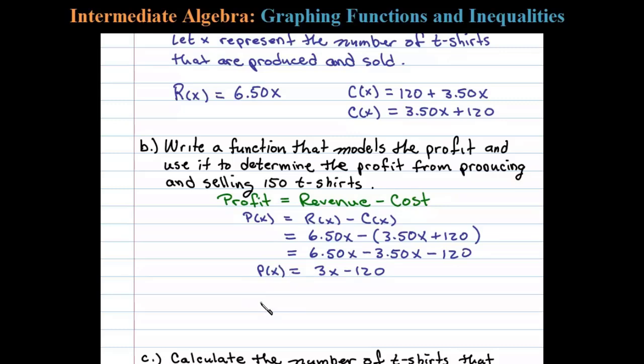Now, we're going to use this to determine the profit of producing and selling 150 t-shirts. We substitute 3 times 150 minus 120. In this case, we get 450 minus 120, which equals 330 dollars. That's our profit from producing and selling 150 units.